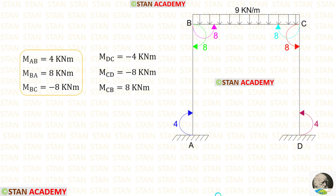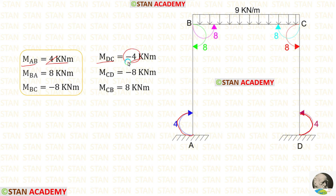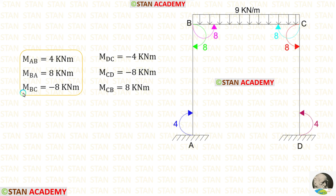Now we can find the remaining moments: M DC, M CD, and M CB. For M AB we got a positive value, meaning it acts in the clockwise direction, so M DC should act in the anti-clockwise direction — same magnitude but applied as negative. For M BA we got a positive value, so M CD should act anti-clockwise, applied as negative. For M BC we got a negative value, meaning anti-clockwise, so M CB should be clockwise — the value should be positive.